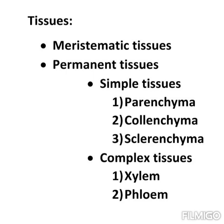First you should recollect about the tissues that we learned in 9th standard. Before understanding tissue, you should know how tissues are formed. A cell is the structural and functional unit of an organism. Cells grouped together form tissues, tissues grouped together form an organ, organs grouped together form an organ system, and organ systems grouped together form an organism.